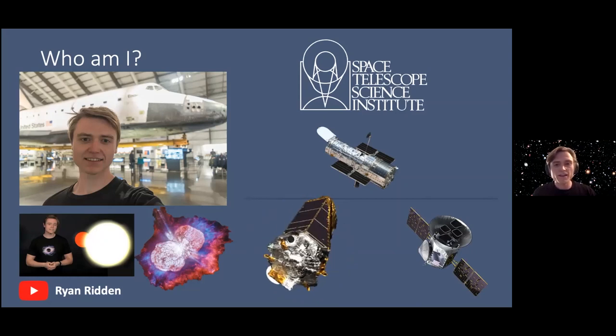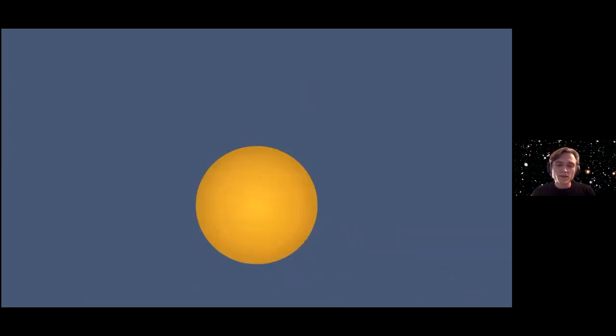But enough about me. Let's start talking about shadows and eclipses. So before we get into shadows, we first need to talk about some kind of light source. In space, this light source is usually a star, like our sun. And these light sources are big shining balls of light in space, and they emit light in every direction.